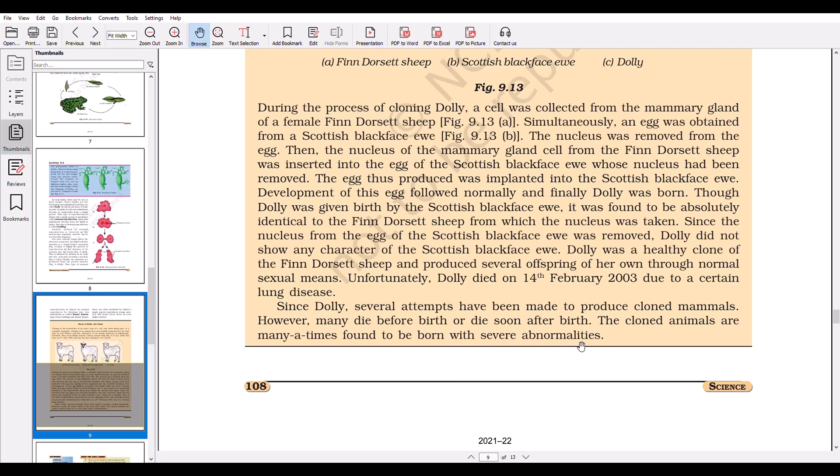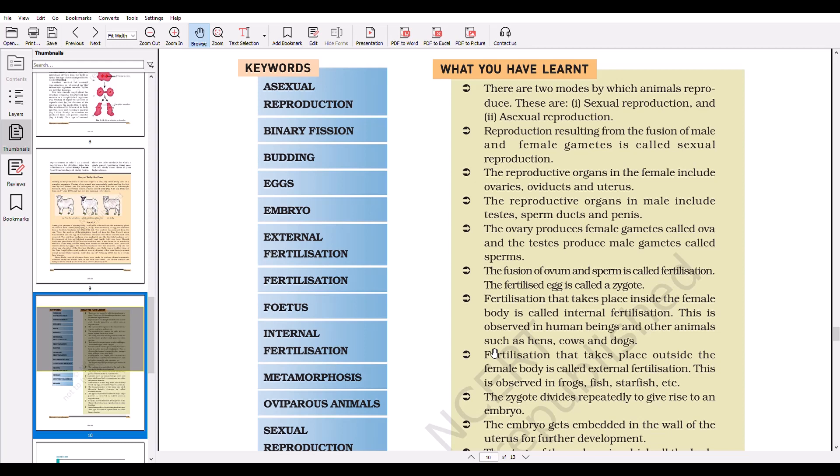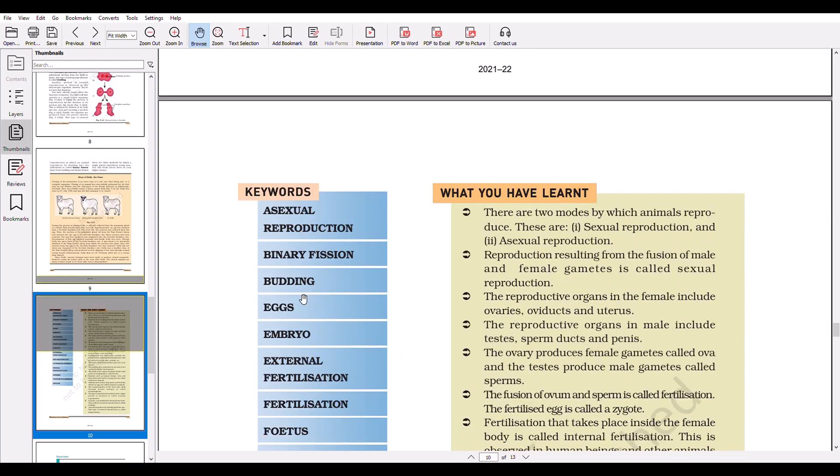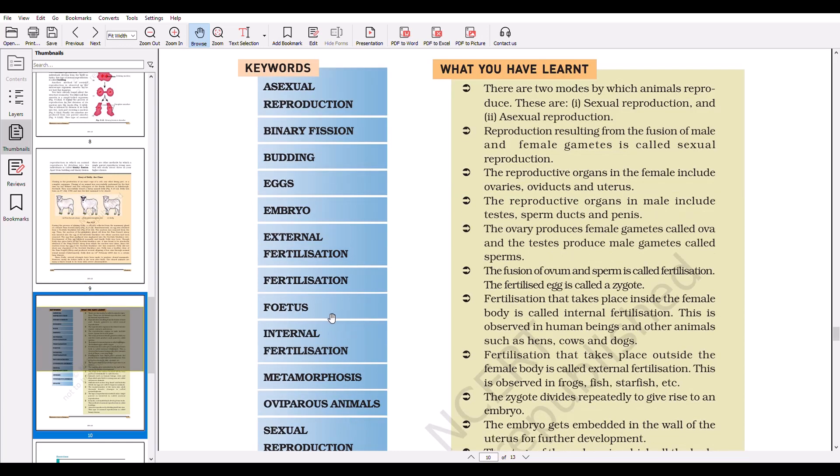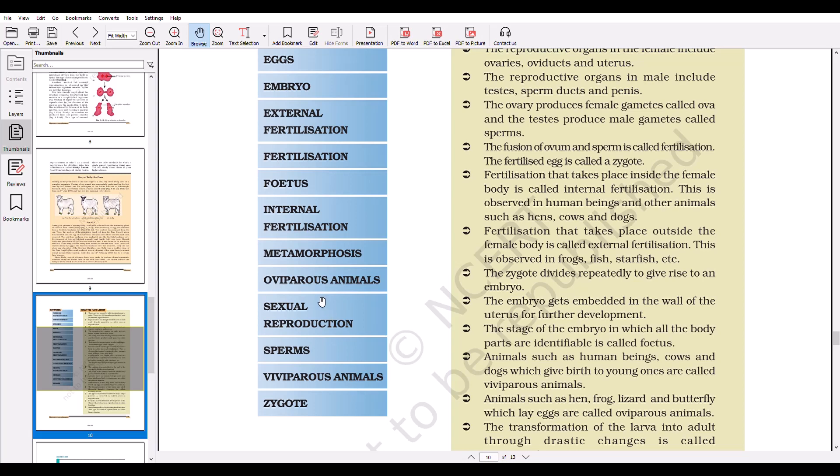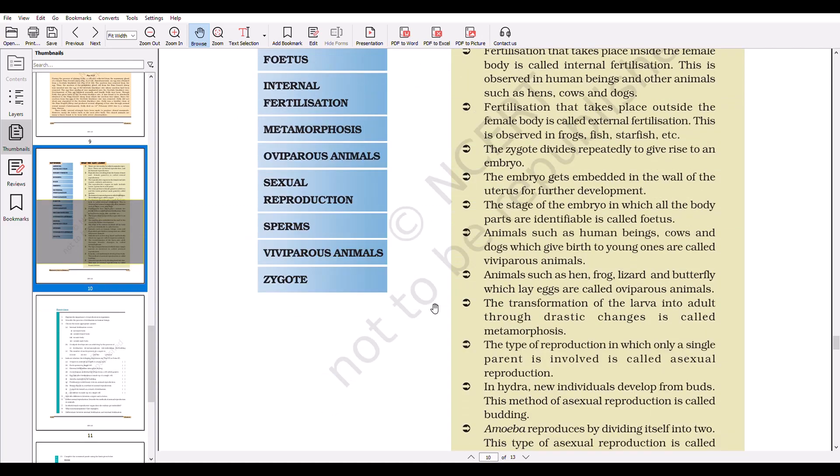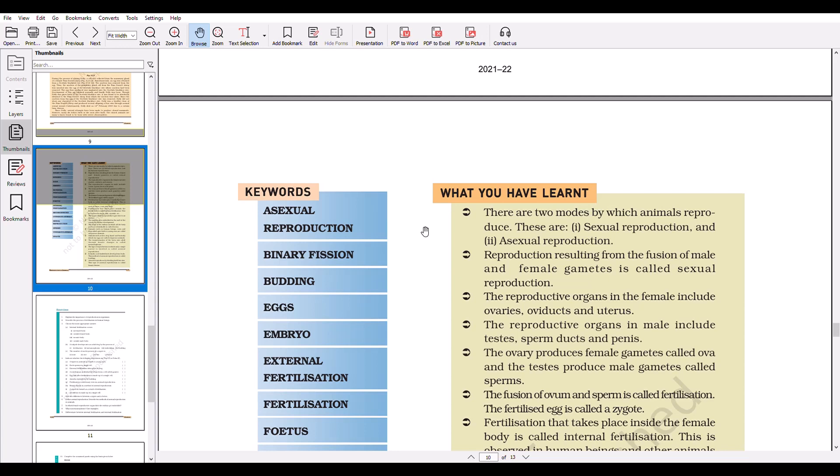Since Dolly, several attempts have been made to produce cloned mammals. However, many die before birth or die soon after birth. The cloned animals are many times found to be born with severe abnormalities. Now, keywords covered in the chapter: asexual reproduction, binary fission, budding, embryo, external fertilization, fertilization, fetus, internal fertilization, metamorphosis, oviparous animals, sexual reproduction, sperms, viviparous animals, and zygote. And this completes the chapter Reproduction in Animals. Thanks.